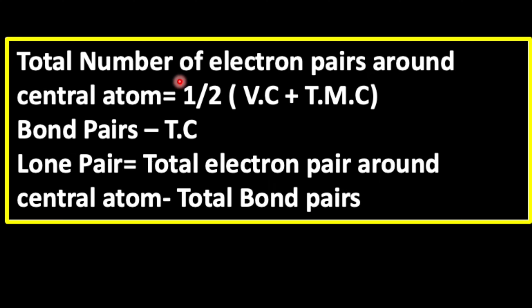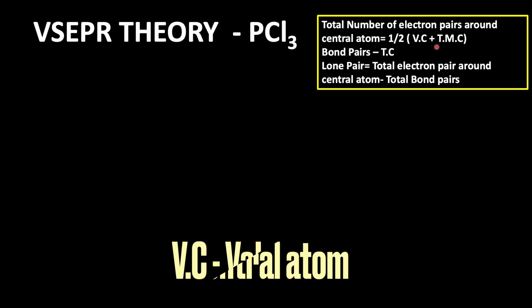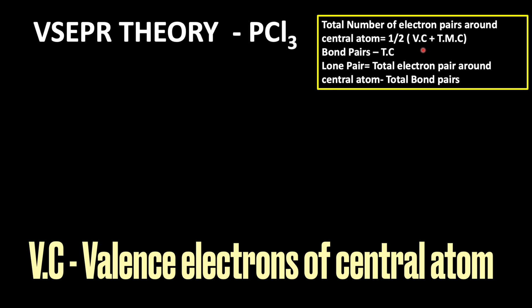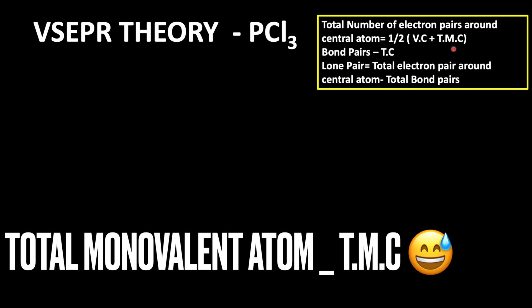Here you can see the formula. Using that, let us try to predict the molecular geometry of PCl3 molecule based on VSEPR theory. The total number of electron pairs around the central atom is equal to half into (Vc + Tmc), where Vc is the valence electrons of the central atom and Tmc is the total monovalent atoms attached to the central atom.